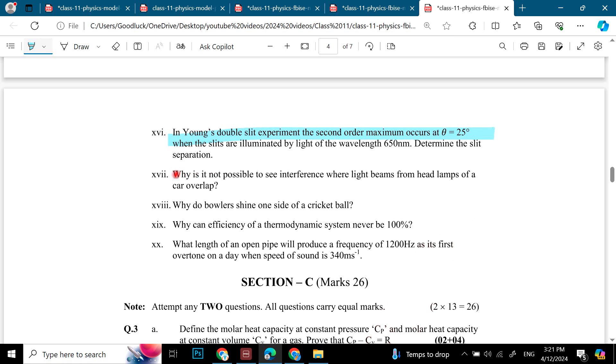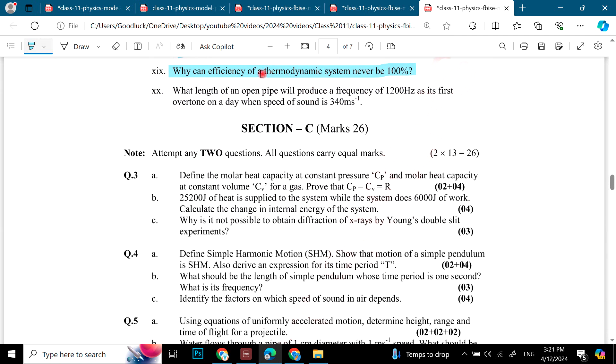Young's double slit experiments related question. Why is it not possible to see interference when light beams from the headlamps of a car overlap? Why do bowlers shine on one side of a cricket ball? Why can efficiency of thermodynamic system can never be 100%? Actually the second law of thermodynamics is the answer. Then one is numerical. CP minus CV is equal to R. Only in short form I have given you four papers.